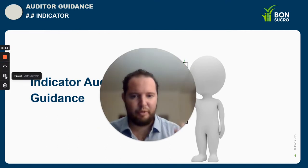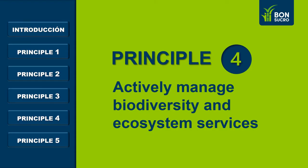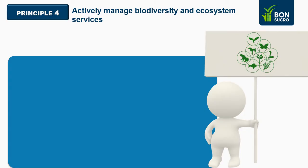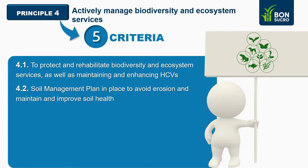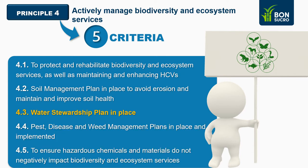From this moment the camera will be closed. Please enjoy the training. Welcome to Module 4, Actively Manage Biodiversity and Ecosystem Services, second part. We continue with this principle that has five criteria: Criteria 4.3 — Water Stewardship Plan in place; 4.4 — Pest, Diseases and Weed Management Plans in place and implemented; 4.5 — to ensure hazardous chemicals and materials do not negatively impact biodiversity and ecosystems. We also continue with Principle 5 in this module.